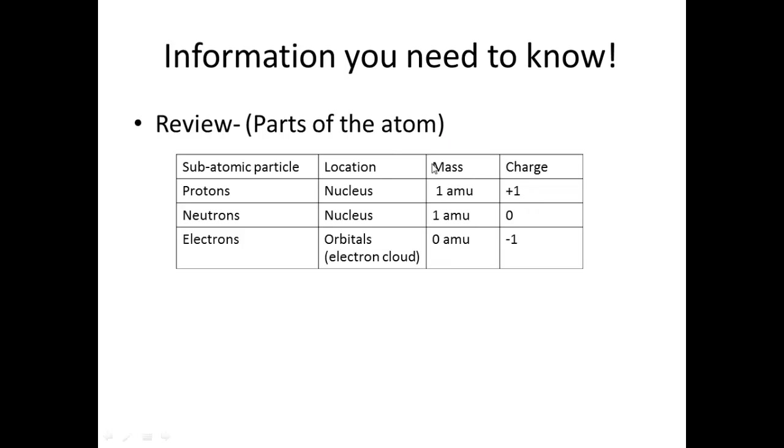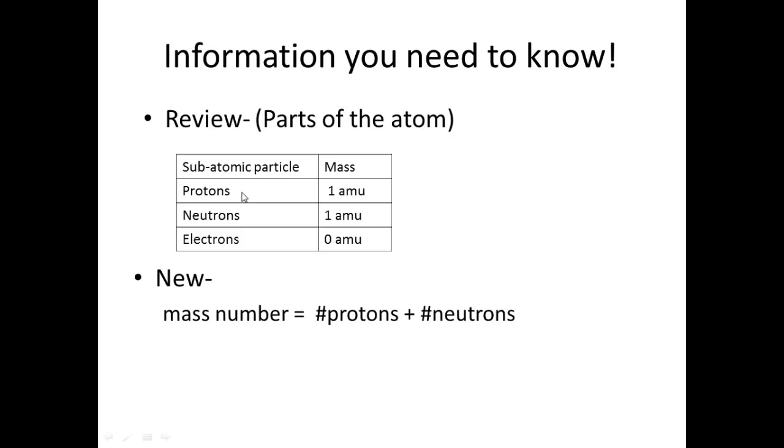So you guys can take a look at this. And what affects the mass of an atom? What two things? Lenny. What subatomic particles affect the mass of an atom? The protons and neutrons. Protons and neutrons. And Felipe, what two subatomic particles affect the charge? Protons and electrons. Protons and electrons. So when you get this, the mass number of an atom is the protons plus the neutrons. Okay? So that's important.